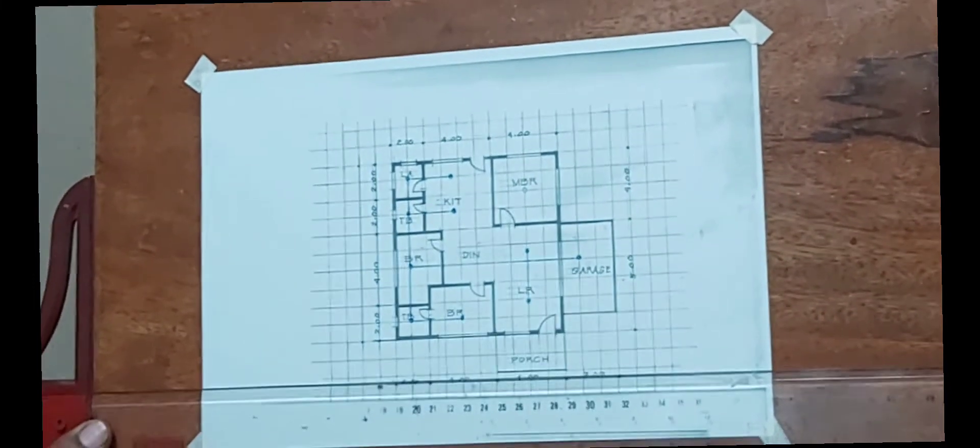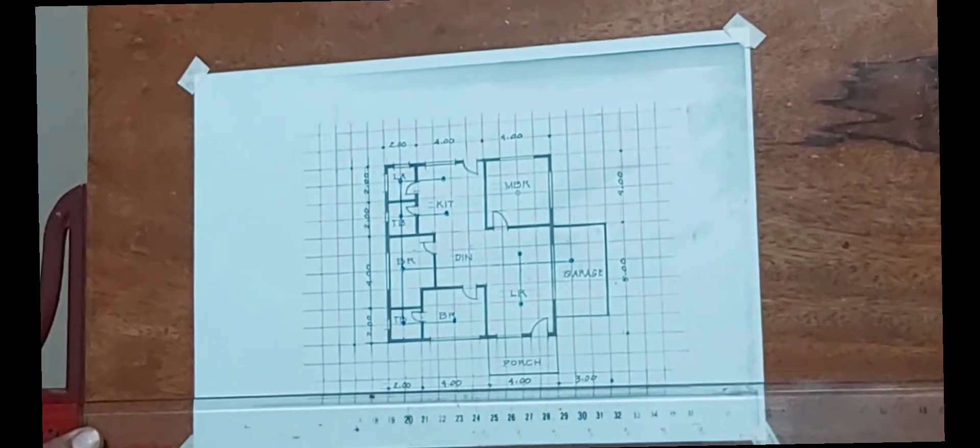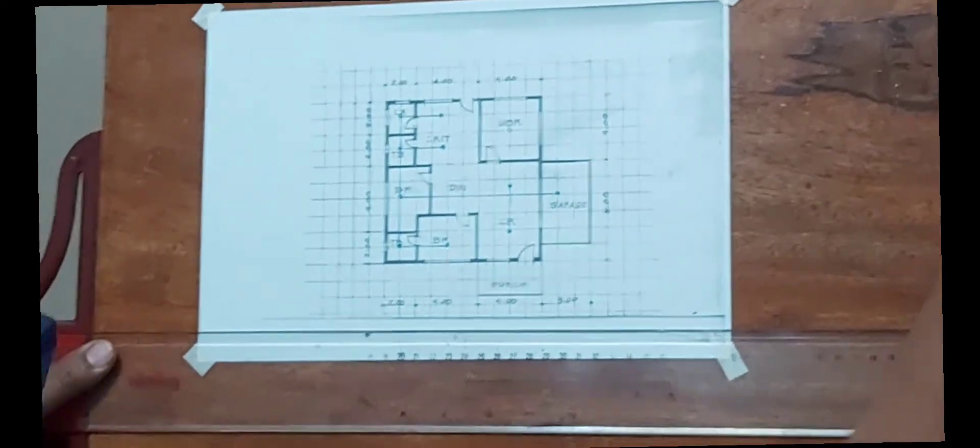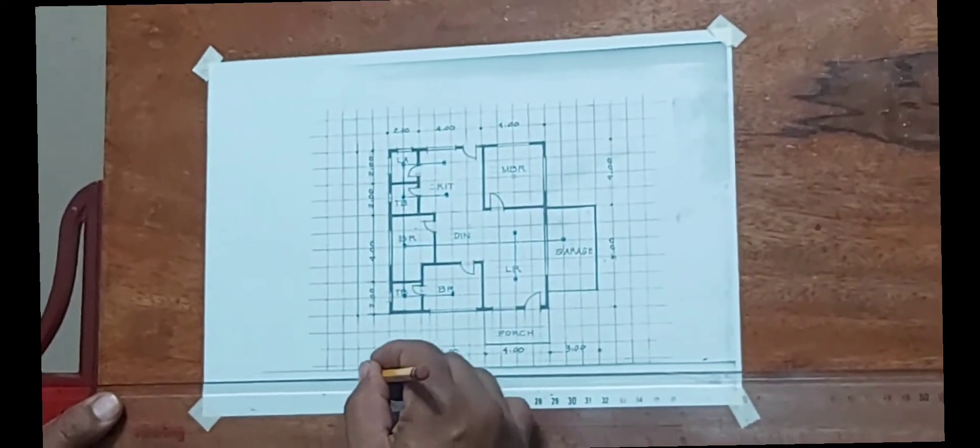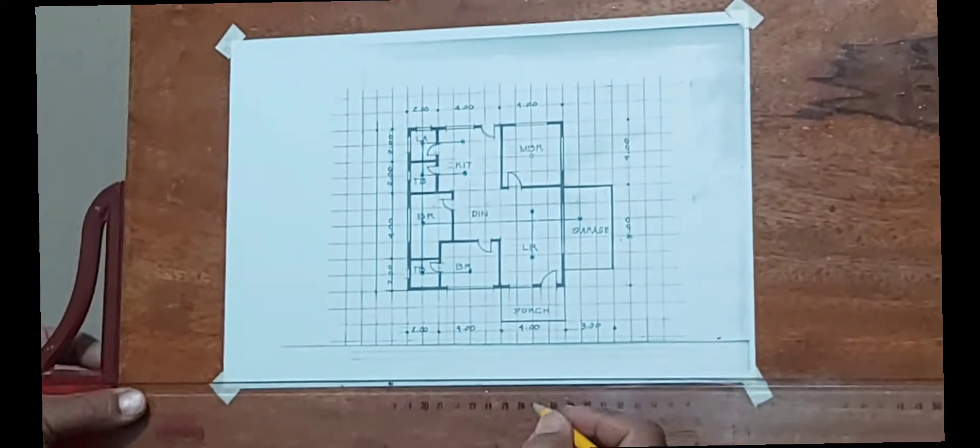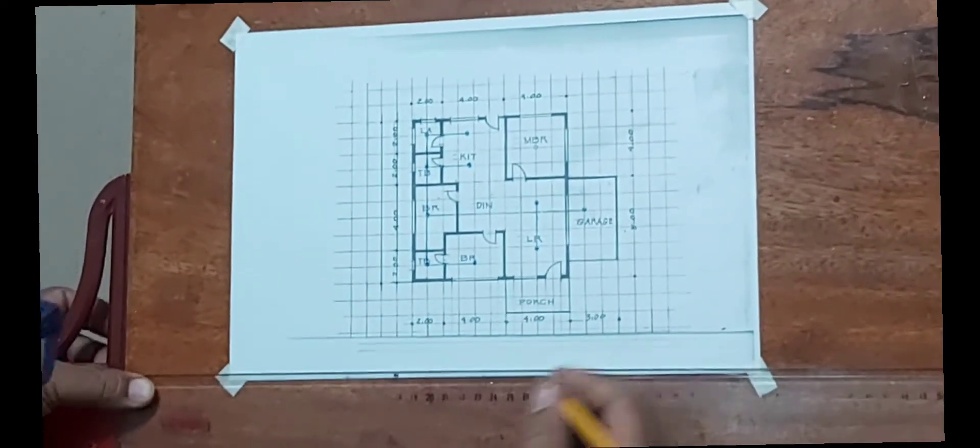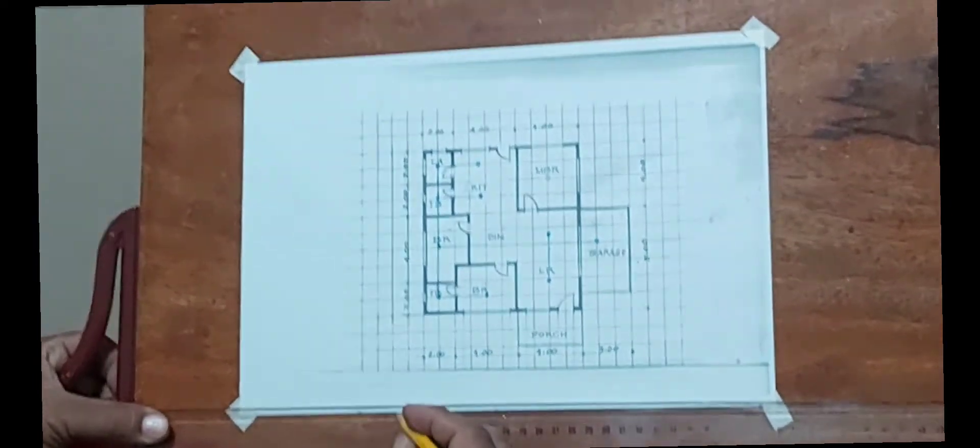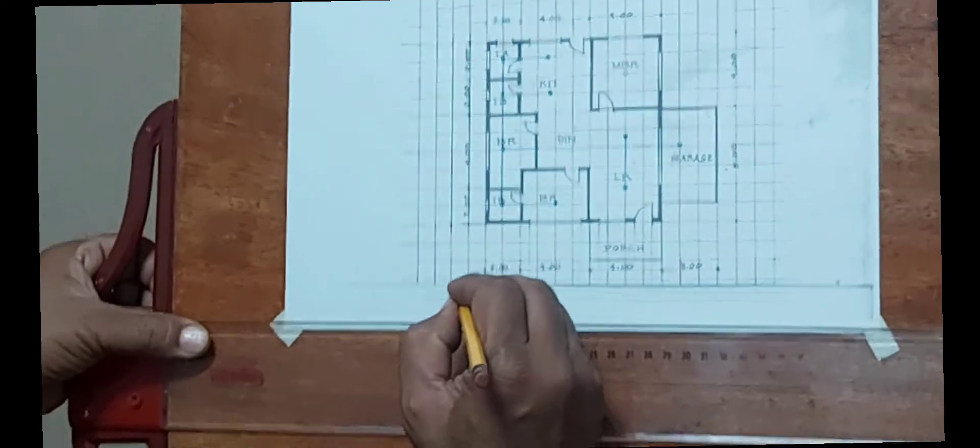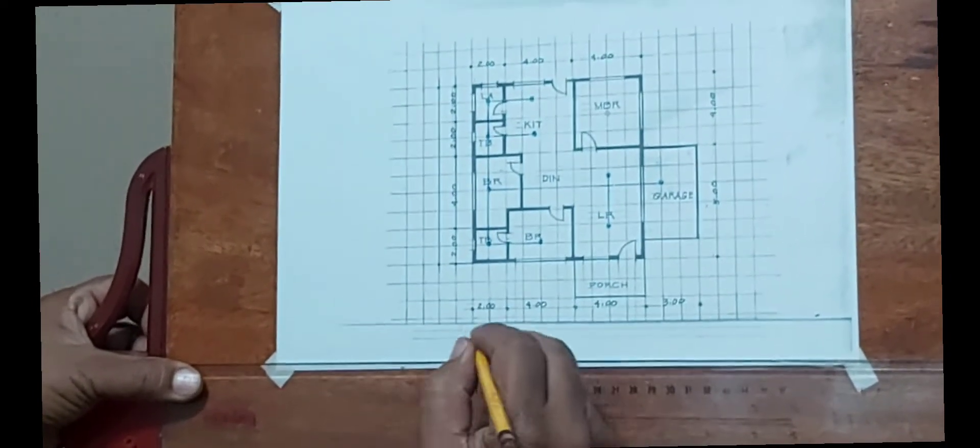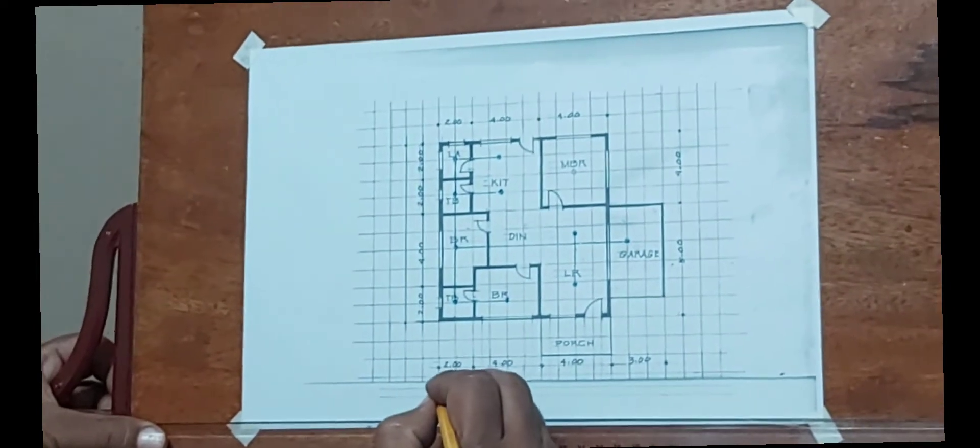Those are the sprinkler heads as well as the pipes. Next is you just have to label your drawing. You can draw first the guidelines for your letters then you just have to write the title of this layout. This is fire protection layout or just the sprinkler layout.